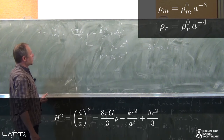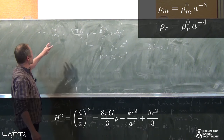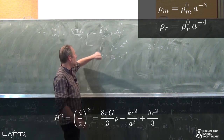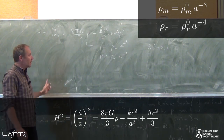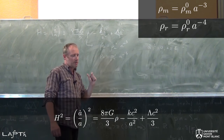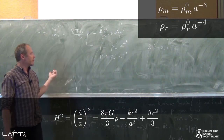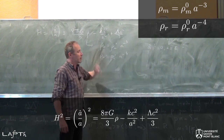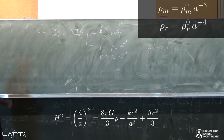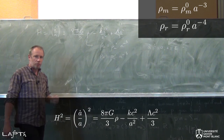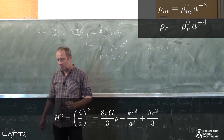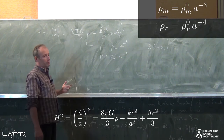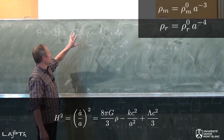Quand on met tout ça ensemble, on voit qu'on a un moyen de calculer A en fonction du temps. C'est une expression qui fait intervenir A point sur A ; là-dedans, il y a du A. Donc tout ça, c'est une équation sur A et on peut espérer la résoudre. Je l'ai fait dans des cas vraiment extrêmement simples pendant les épisodes précédents, en ne considérant qu'une seule composante. L'objectif de l'épisode que je vais développer maintenant, c'est de s'intéresser à des cas un petit peu plus complexes, dans lesquels il y a plus d'une composante. On va essentiellement résoudre l'équation différentielle qui est ici.